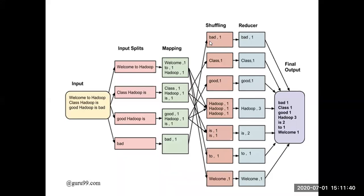If you look at this MapReduce example, there are four phases: the splitting phase, mapping phase, shuffling phase, and reducing phase. Totally four phases are there in MapReduce.